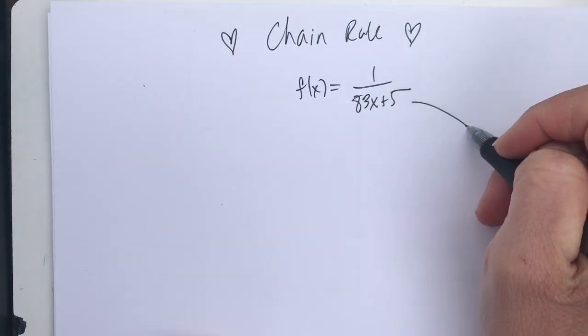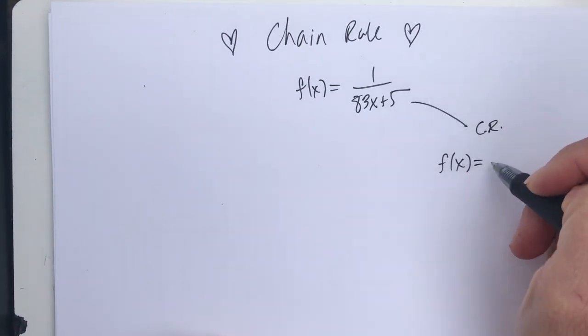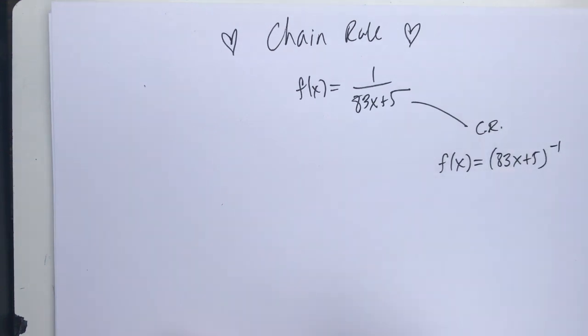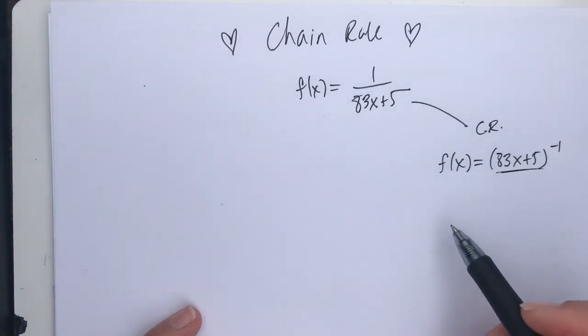In the world of the chain rule, I'm going to rewrite f of x so I have 83x plus 5 to the negative 1 power. And applying the chain rule, I'm going to recognize my outside function is something raised to the negative 1 power, and my inside function is this 83x plus 5.